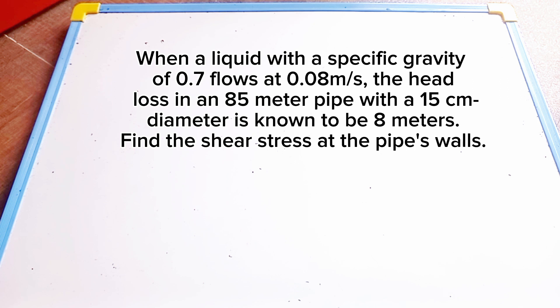Good day everyone. Today we're going to solve another problem in fluid mechanics in chapter seven, which is all about the fluid flow in pipes. When a liquid with a specific gravity of 0.7 flows at 0.08 meters per second...